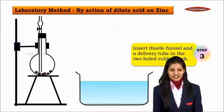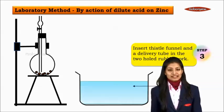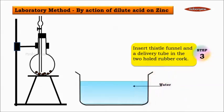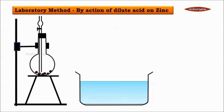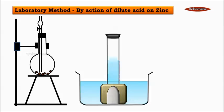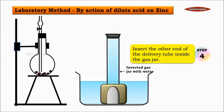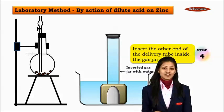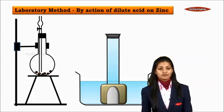Now we have a tub which is filled with water inside which we are going to add an inverted gas jar which is attached to the beehive shelf. Now insert the other end of the delivery tube to the gas jar.